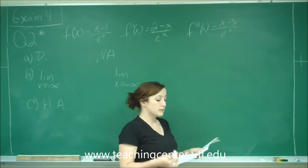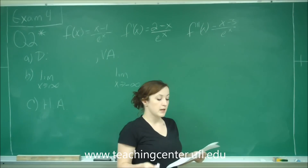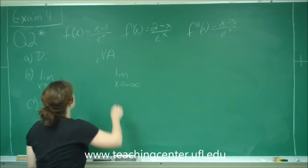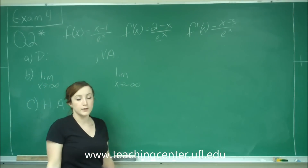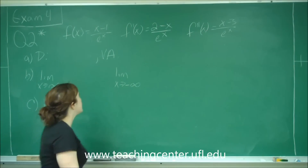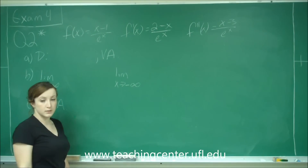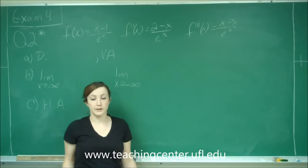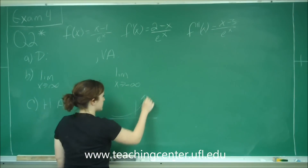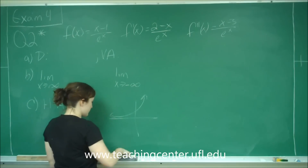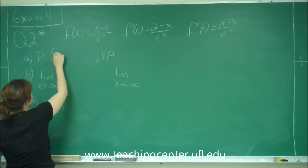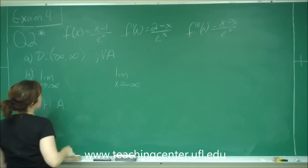Now it wants us to determine the following, leaving function values in terms of e, and if none, write none. First is the domain of f of x. The domain is any value we can plug in for x such that it does not make the denominator undefined. Well, e to the x is never going to equal 0, and our function is undefined when the denominator equals 0. Since e to the x never goes to 0, our domain is from negative infinity to positive infinity.